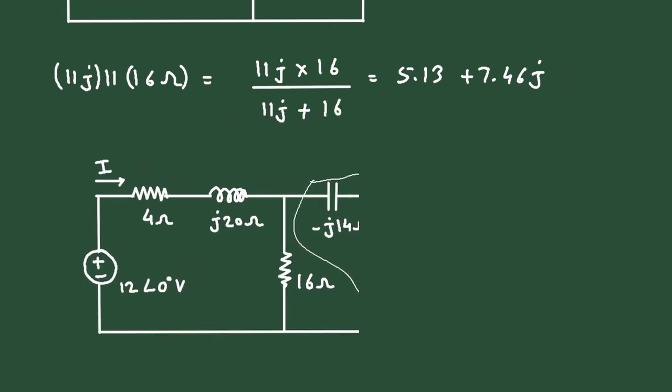Let's copy this circuit from here. So here we can erase this much part. Now here this impedance will be 5.13 + 7.46j. And its unit will be ohm.